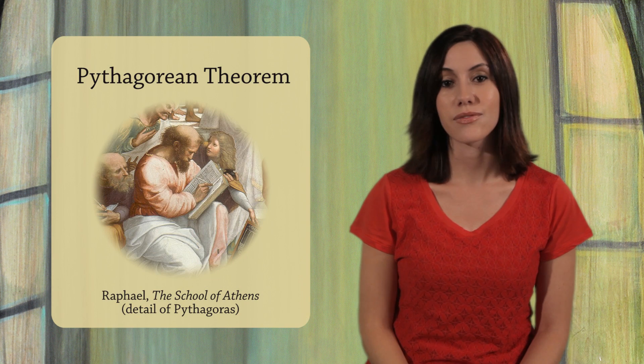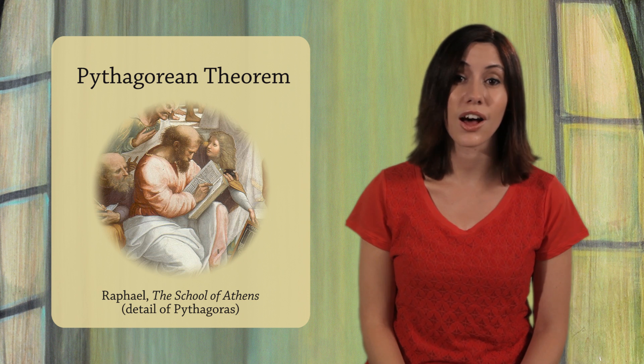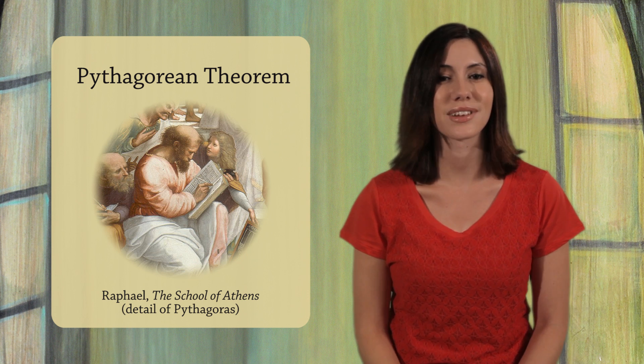For a right triangle, if you know two of the sides, you can find the third side. You find the length of the third side using the Pythagorean theorem, which is named in honor of the ancient scholar Pythagoras. Here's what it says.